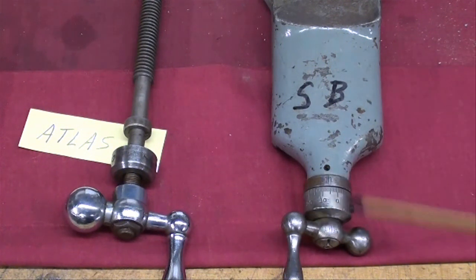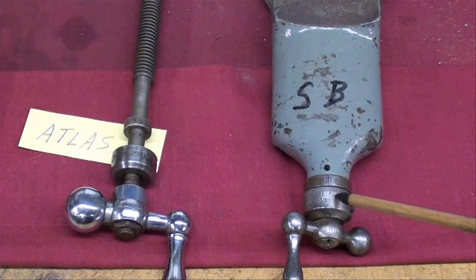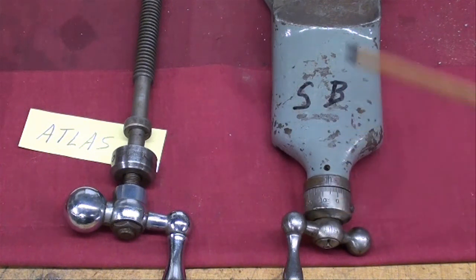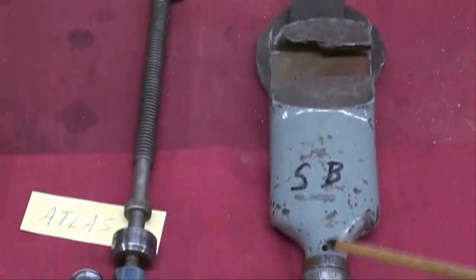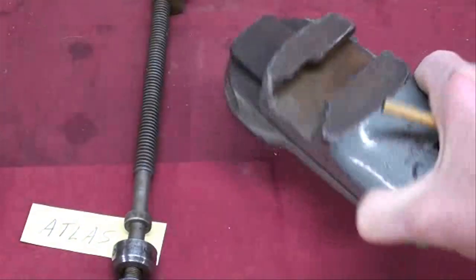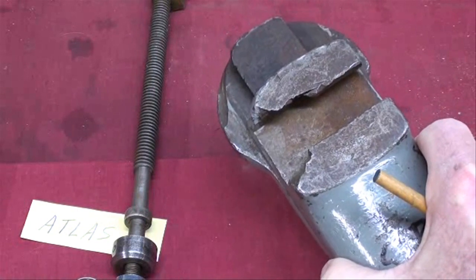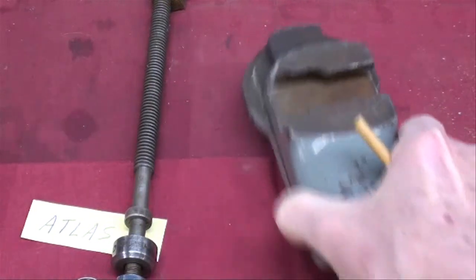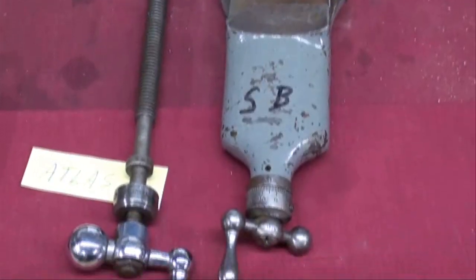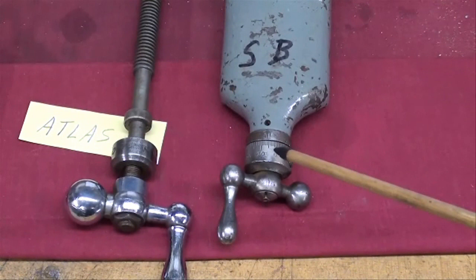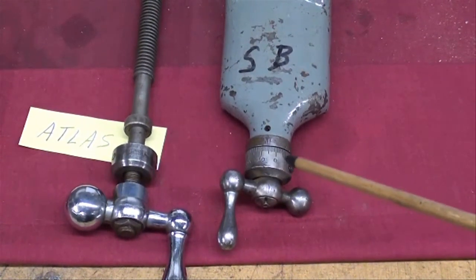But I want to talk about the actual diameters of the collars on the cross slide and the compound of different lathes. Now this is an older South Bend compound, and it's really a piece of junk because someone had cracked out the tool post T-slot. Obviously put too much muscle on it, they probably had the tool post too close to the edge. Anyway, that's the South Bend, and notice how small in diameter the actual dial is. In fact, it's about seven-eighths diameter on this one.